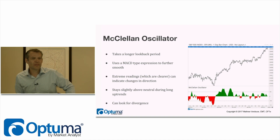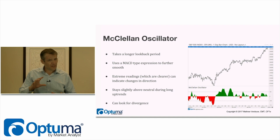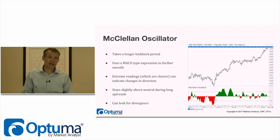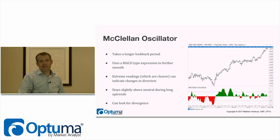The McClellan Oscillator was developed in the late 1960s/early 1970s by Sherman McClellan. It takes the AD oscillator and applies two exponential moving averages, then takes an oscillator between them. You can look for crossings of the zero line — very simple to see in large pivots on the chart — or use zones where crossing back into the middle zone or crossing down into it again could be great signals.